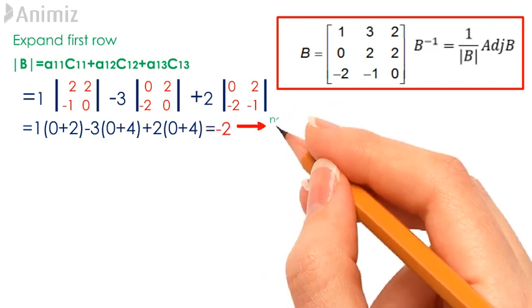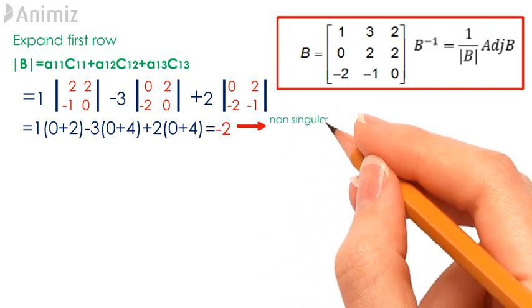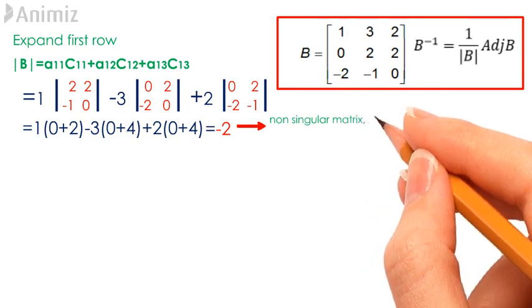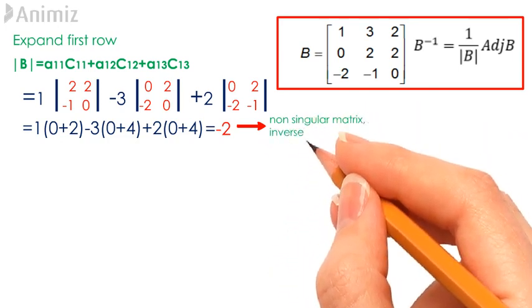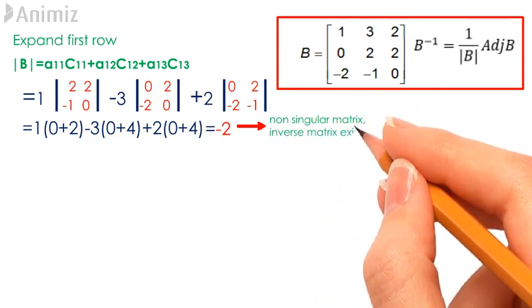Therefore, matrix B is a non-singular matrix and its inverse matrix exists.